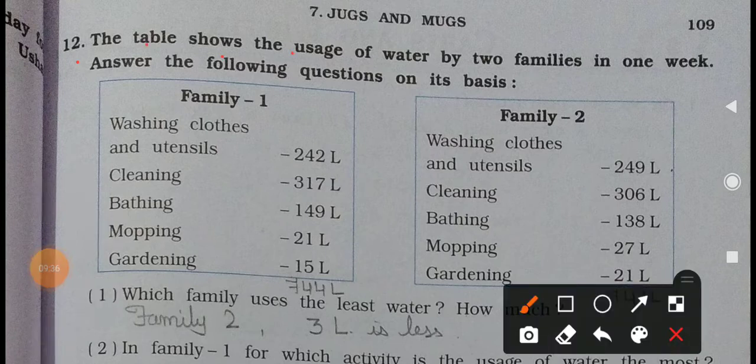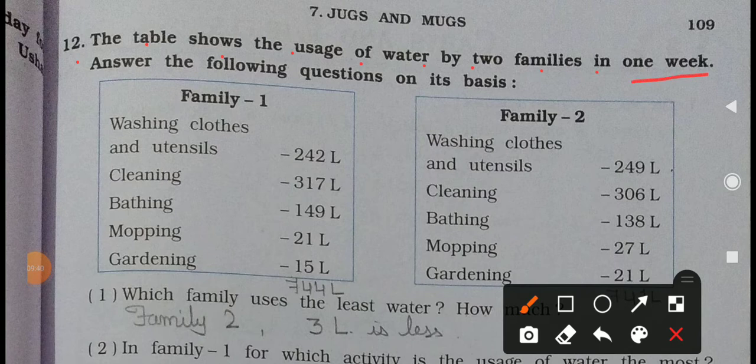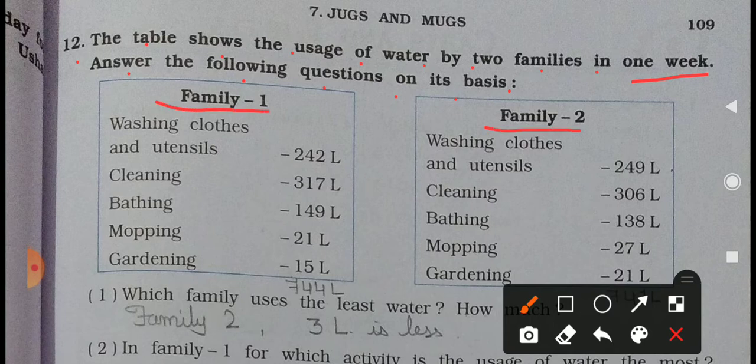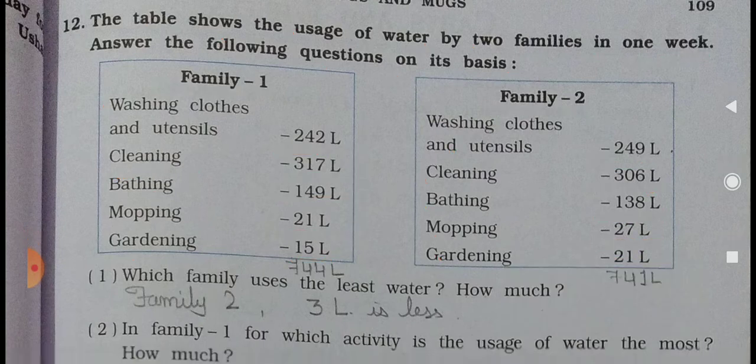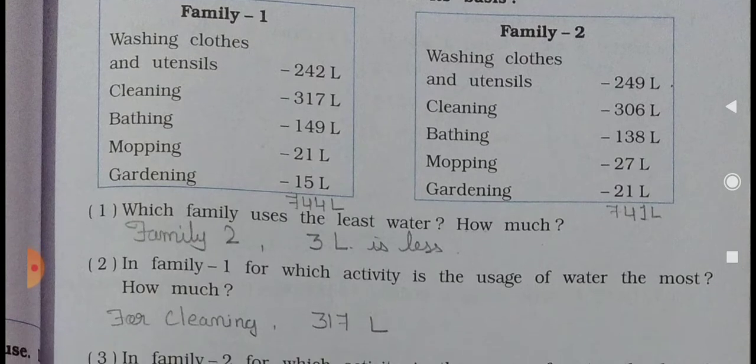Question number 12. The table shows the usage of water by two families in one week. Answer the following questions on its basis. Here is Family 1 and Family 2. Using washing clothes and utensils 242, Cleaning 317, Bathing 149, Mopping 21 liter, and Gardening 15 liter. Family 1 is using this much water in 1 week. Washing clothes and utensils, and Cleaning 306, Bathing 138, Mopping 27 liter, and Gardening is 21 liter. Like this, 2 families are here. According to this let's give the answer.